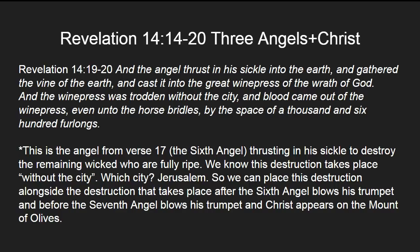The angel thrust in his sickle into the earth, gathered the vine of the earth, and cast it into the great winepress of the wrath of God. The winepress was trodden without the city, and blood came out even unto the horse's bridles, by the space of a thousand and six hundred furlongs. This angel that thrusts in his sickle is the sixth angel, destroying the remaining wicked who are fully ripe for destruction outside the city — Jerusalem. This places the destruction alongside what happens after the sixth angel blows his trumpet and before the seventh angel blows his and Christ appears on the Mount of Olives.